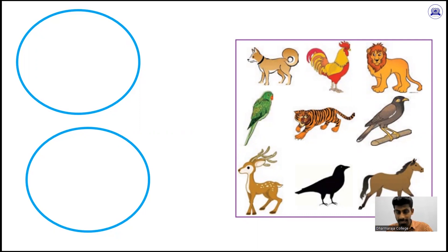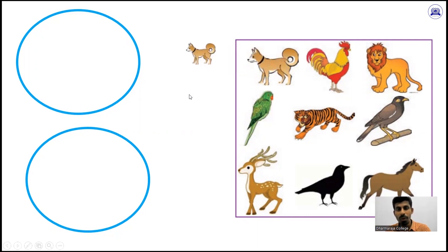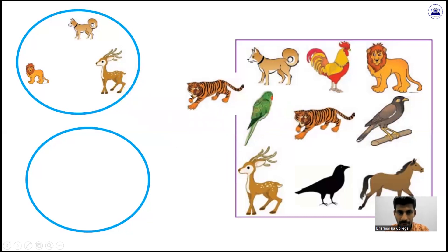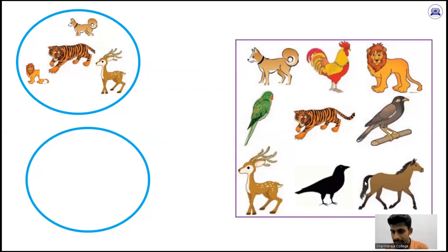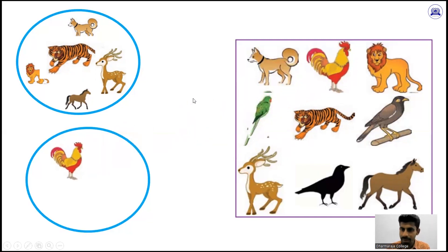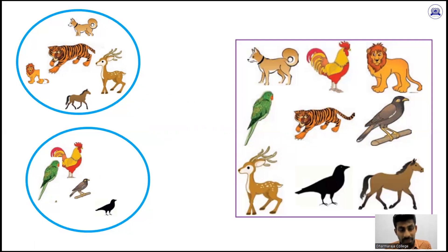Can you separate them into two groups? What are they? Animals and birds. I am going to move the dog, lion, tiger, and deer into a separate group. There is also a horse. So I am going to separate those animals into one group. The second group is birds: parrot, hen, and crow. So those are the two categories — animals and birds.